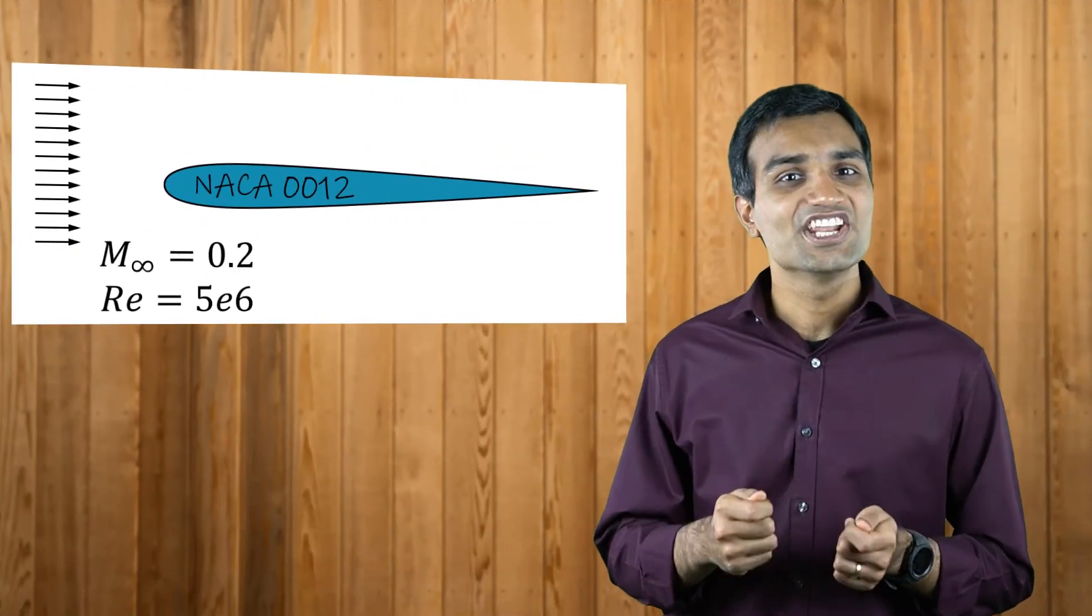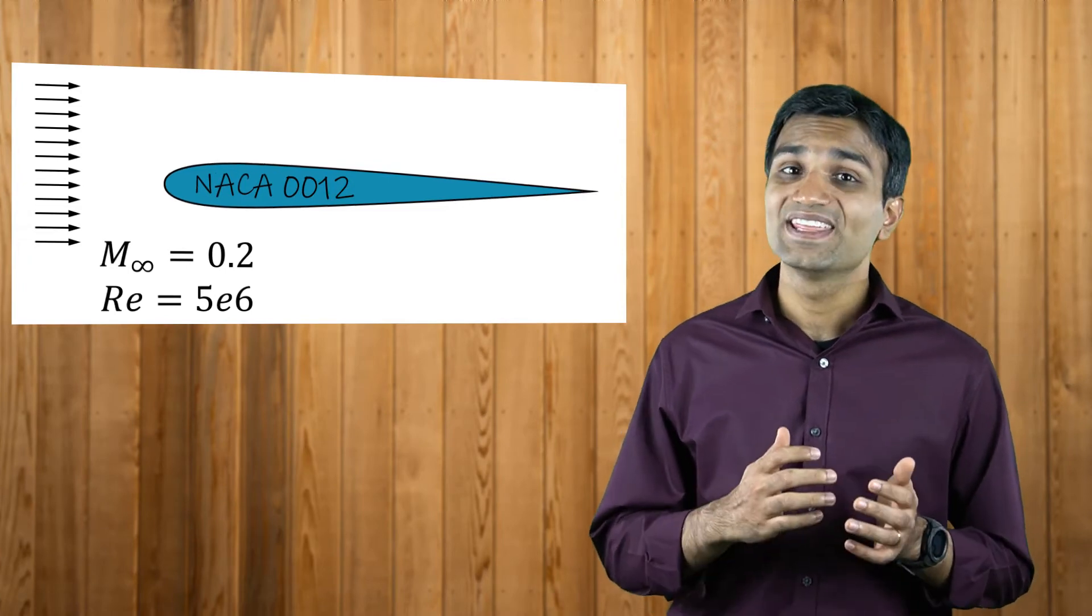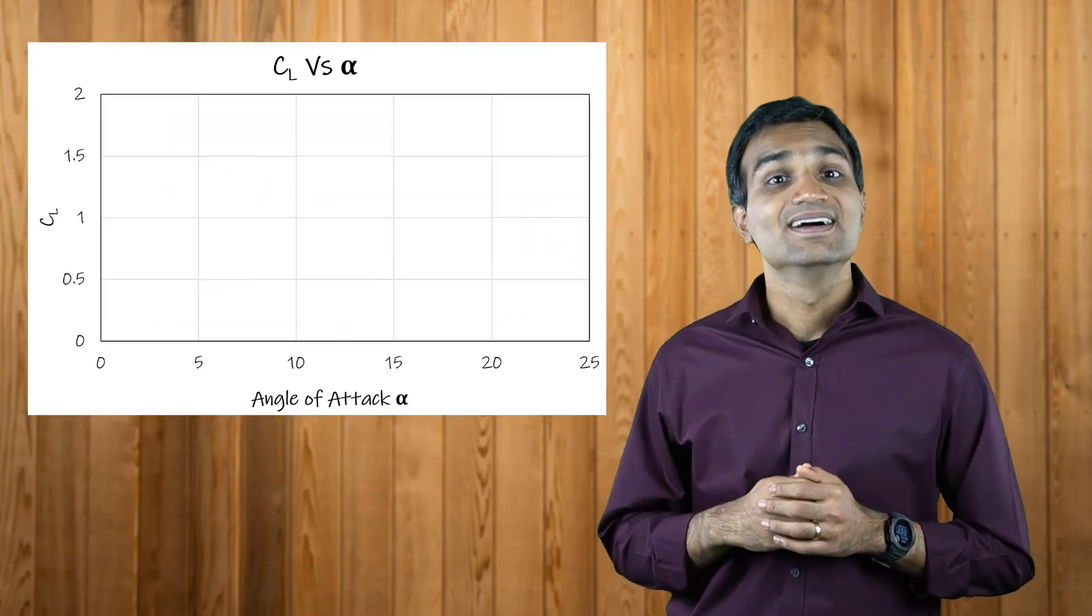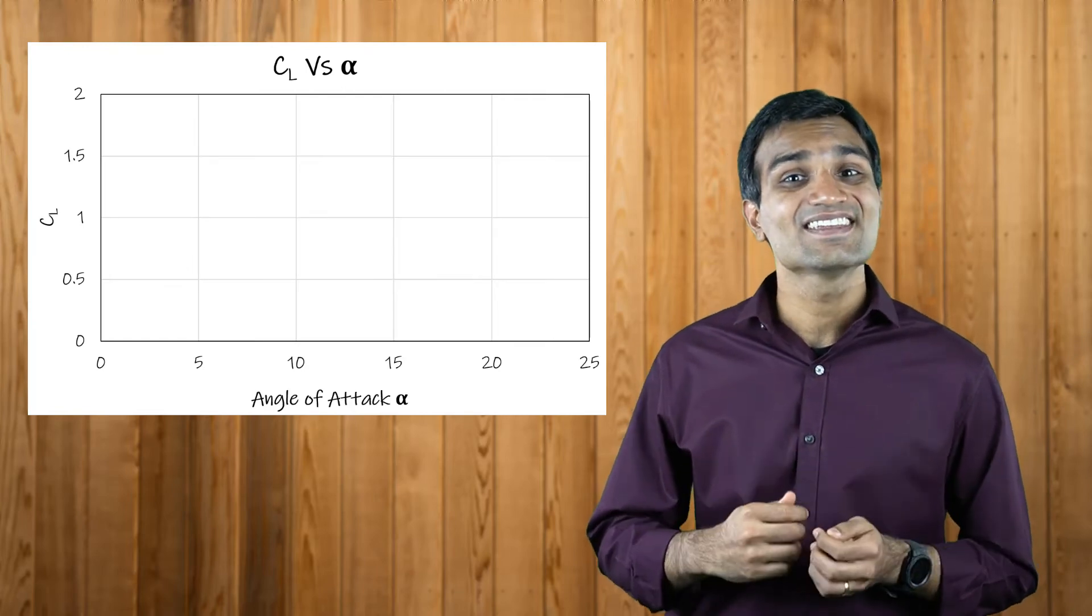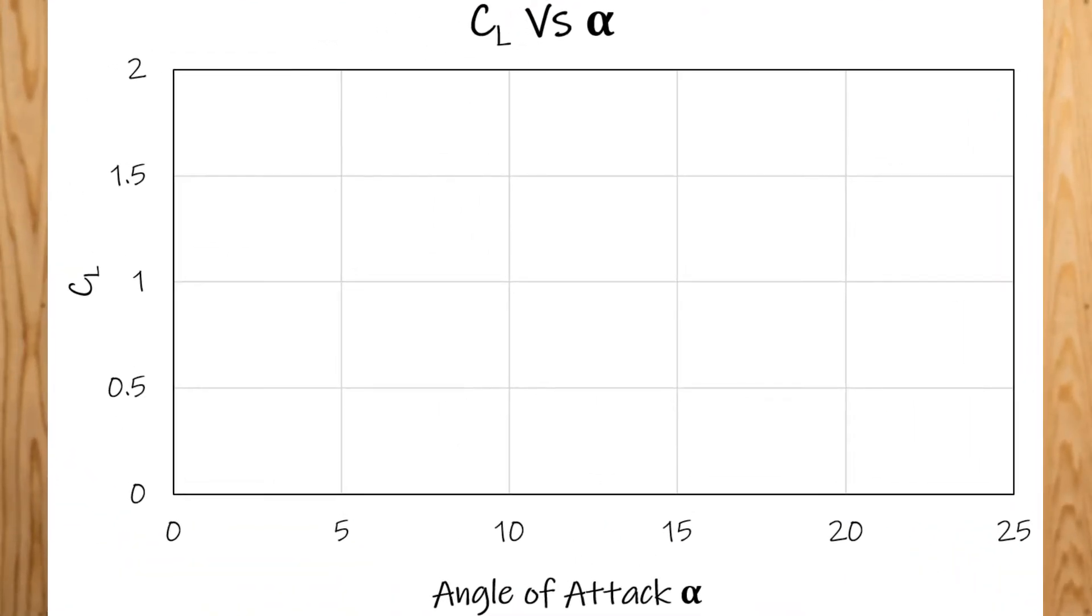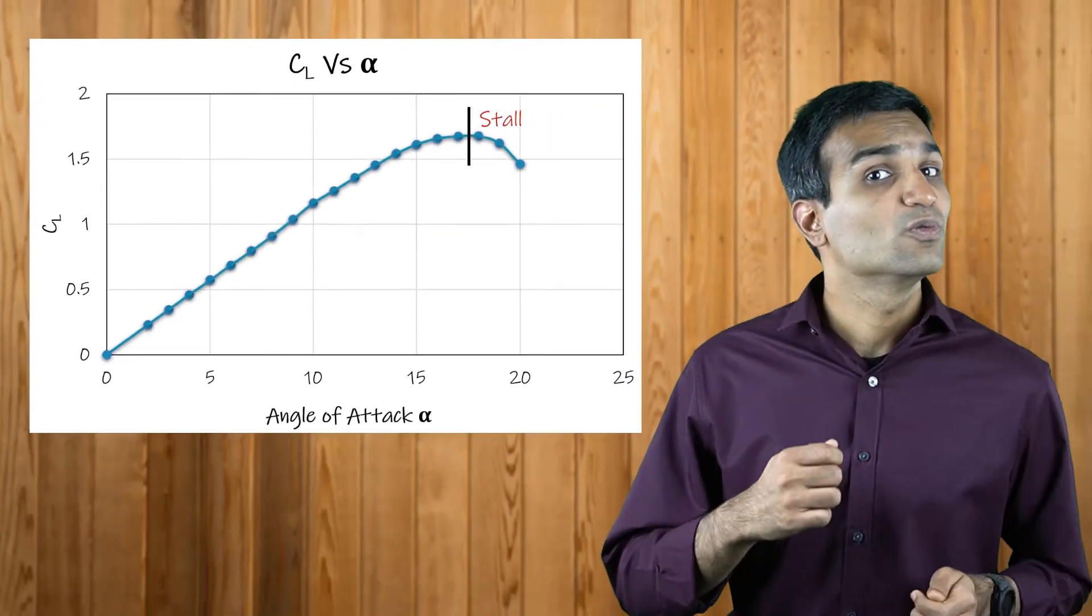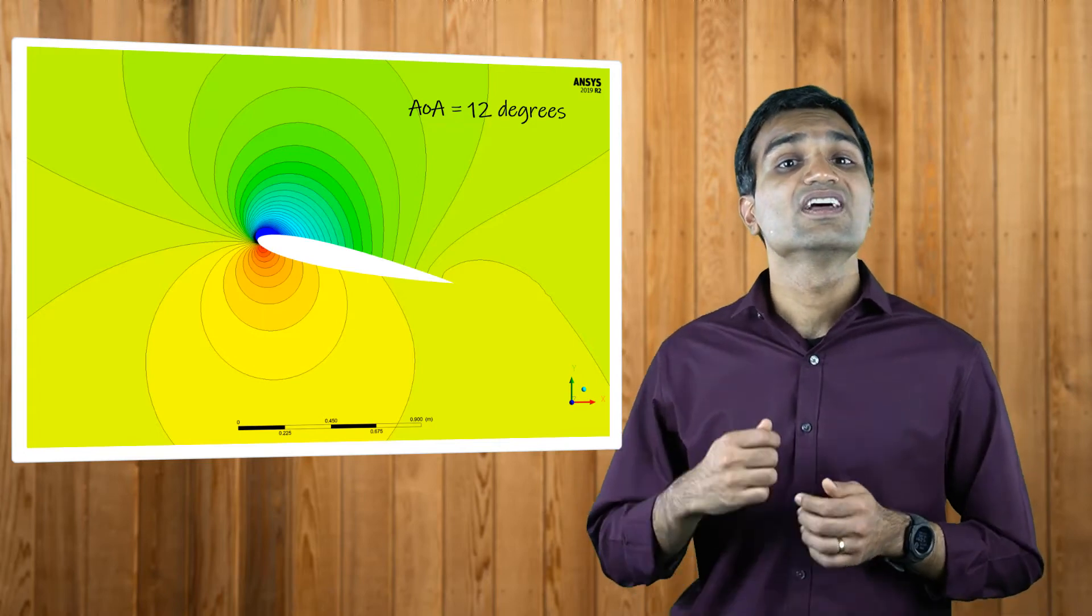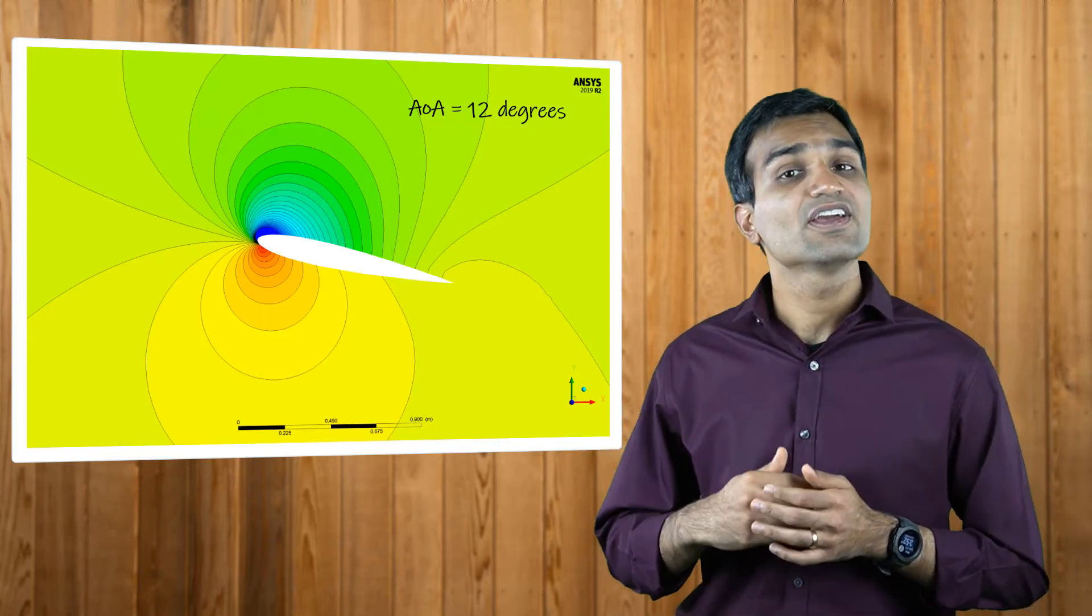The lift force generated by an airfoil is proportional to the angle of attack especially for small angles. The lift coefficient increases with this angle. For the NACA 0012, beyond an angle of 10 degrees, the airfoil reaches a critical value after which the generated lift force suddenly plummets. This is called wing stall and is primarily caused by flow separation occurring on the upper surface of the airfoil.